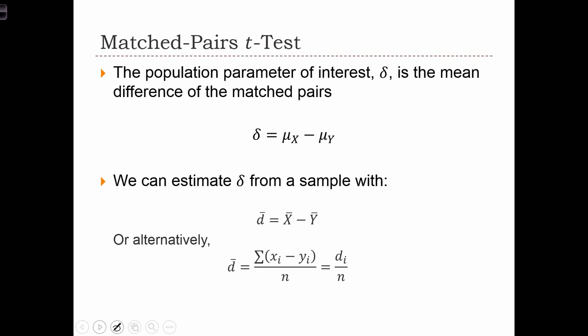In order to do these types of matched pairs tests, we're going to be using a t-test. And we're going to define a new population parameter, delta. That's this thing over here. Greek for d.